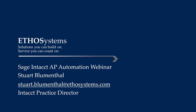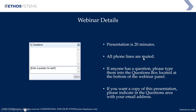Welcome everyone to our continuing series here at Etho Systems on Sage Intacct. My name is Stir Blumenthal, the Intacct Practice Director. Today we're going to be going over the AP Automation module — some tips and tricks on how to get this module started within Sage Intacct. This presentation is short, only about 20-25 minutes depending on Q&A. Phone lines are muted; please put questions in the questions feature within GoToWebinar.